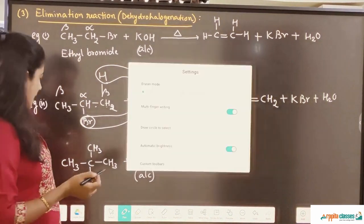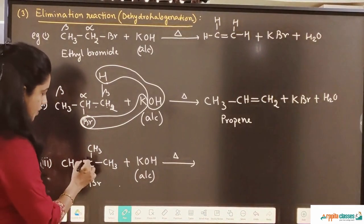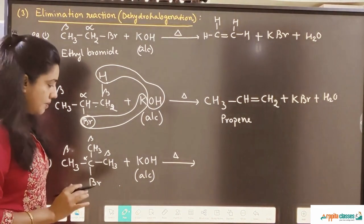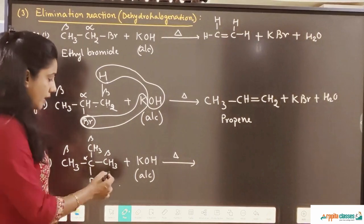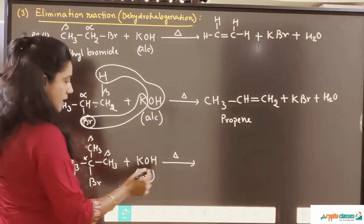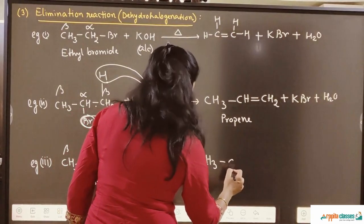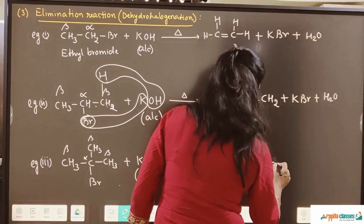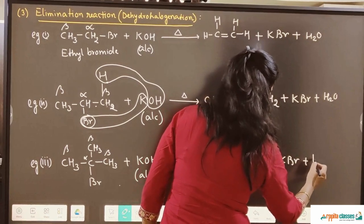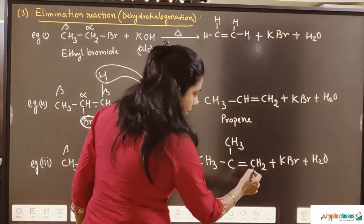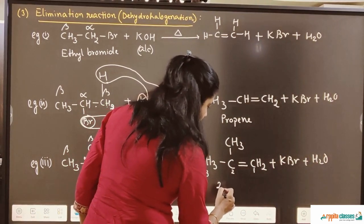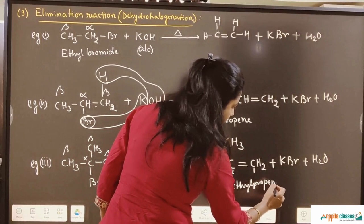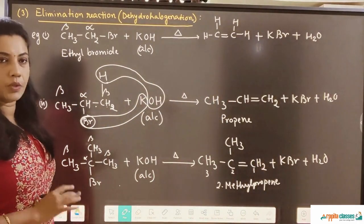Same thing we will see in this next reaction. This is your alpha carbon, these are the beta carbons — all these beta carbons are the same type. So you choose one beta carbon and take out the hydrogen from there. Choosing this beta carbon, we get CH3C(CH3)=CH2. The byproducts are KBr plus H2O. The name of this compound is 2-methylpropene. So we get 2-methylpropene here.